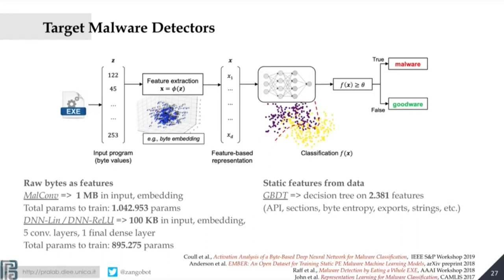We also have something like EmberBot, which is a gradient boosting decision tree trained on features from the PE file. We take a program and extract APIs, sections, entropy, and other relevant information to produce a compact representation of around 2K features instead of one megabyte, and then run machine learning on that. This model is not differentiable. So on the left we have differentiable models, on the right non-differentiable models. We use the hybrid optimizer for the left and the gradient-free optimizer on the right.